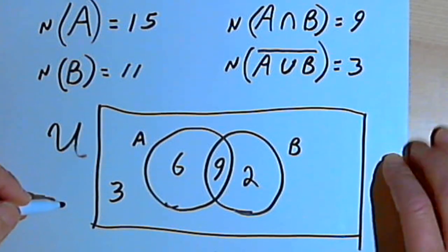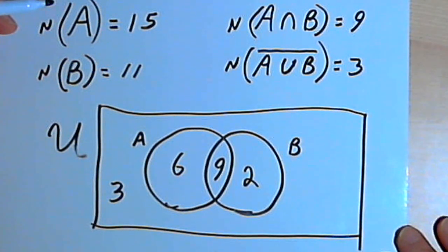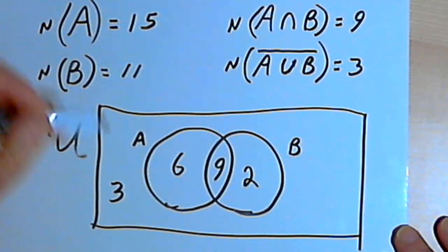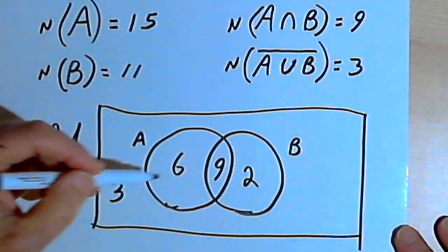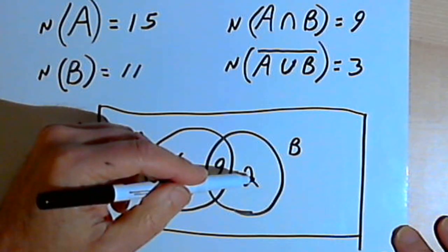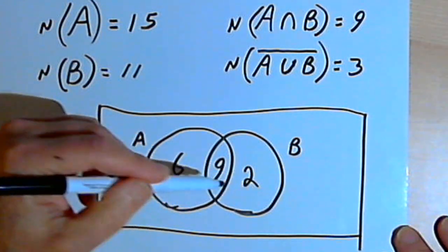And then the last question was how many students are in the entire group? Well, to find that, all I have to do is add together the contents, the number of elements in all of these subsets.